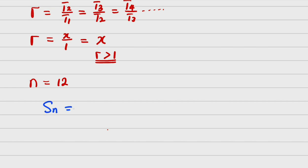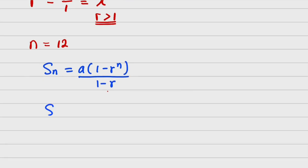Now we have SN is either A into 1 minus R raised to the power N all over 1 minus R. Or we have our SN is equals to A into R raised to the power N minus 1 all over R minus 1.